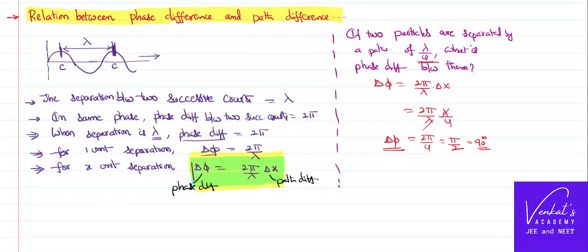So the phase difference between the particles is 90 degrees when the path difference between them is equal to lambda by 4. We can find other such relations and will be using this further. Okay, that's it — thank you for watching.